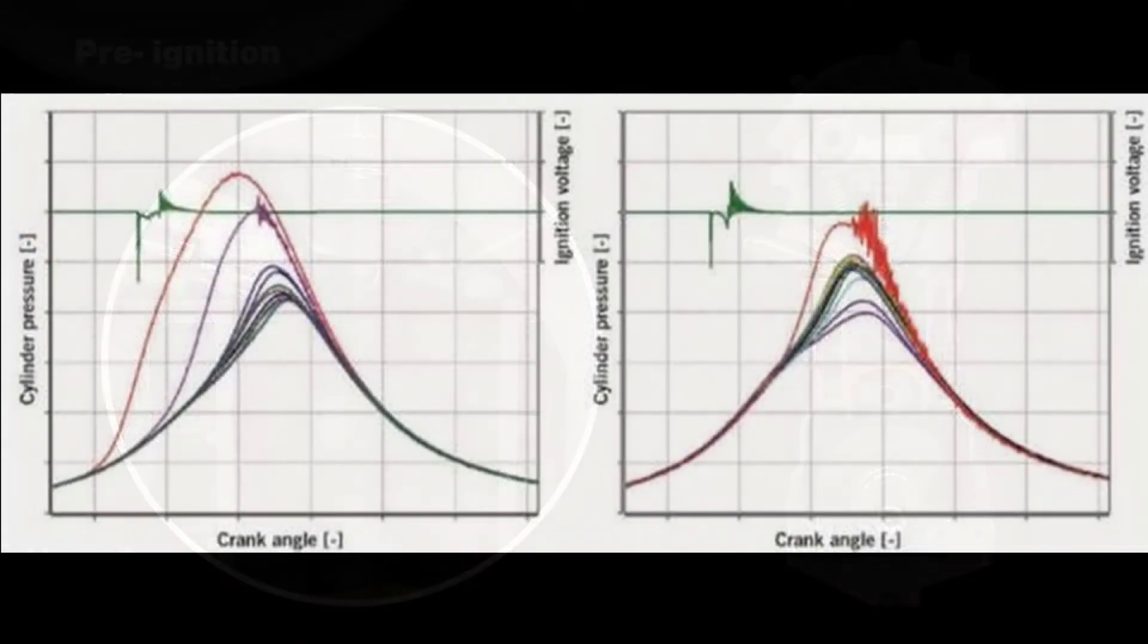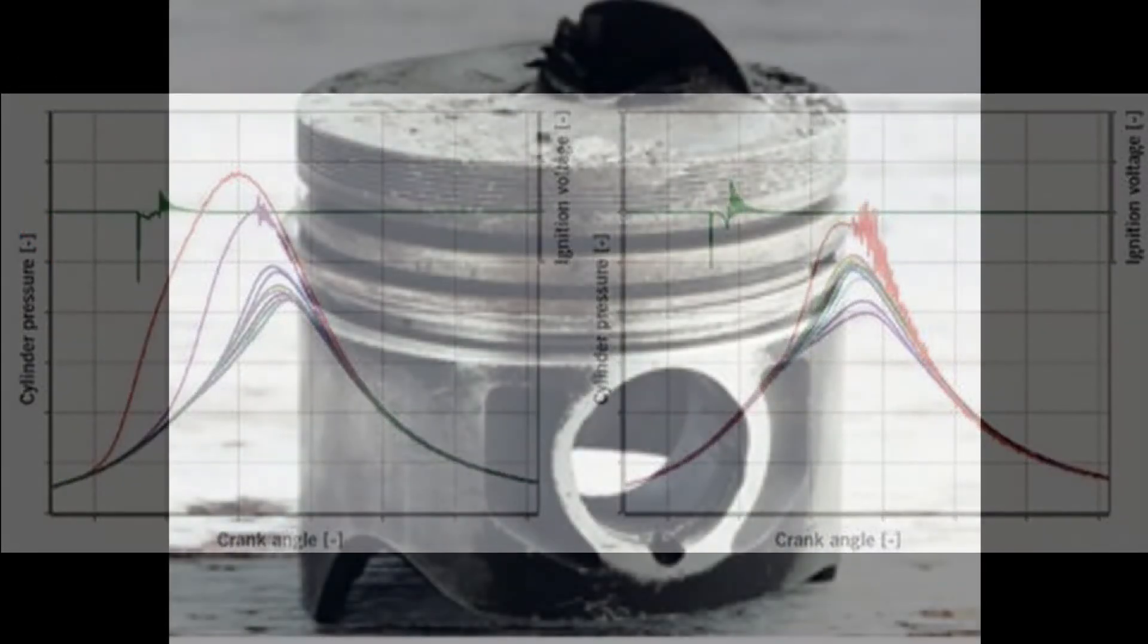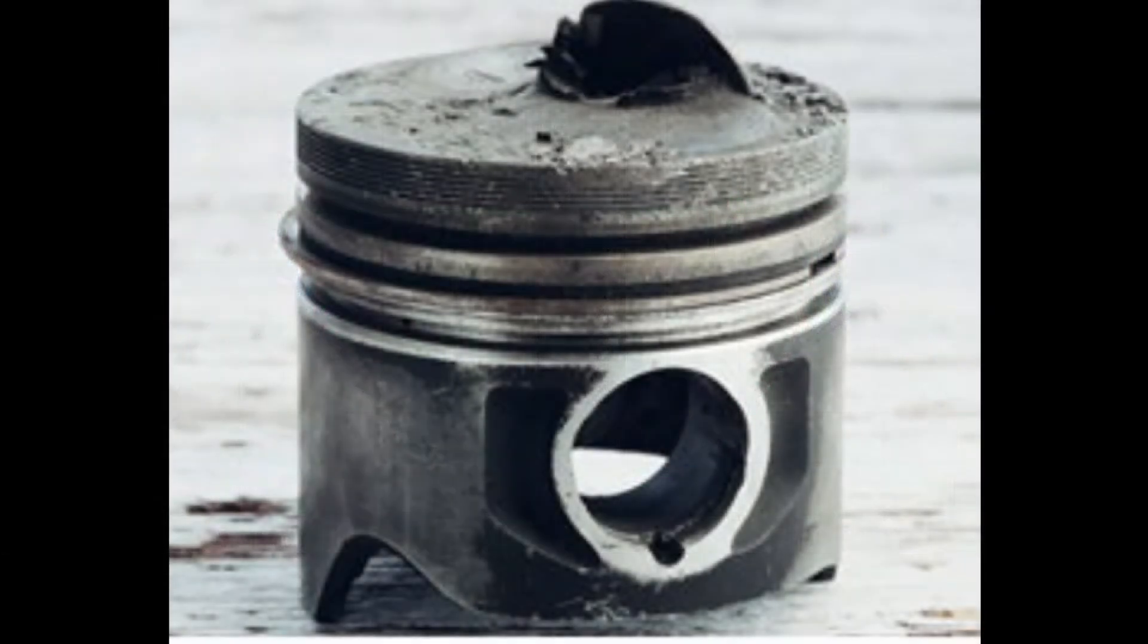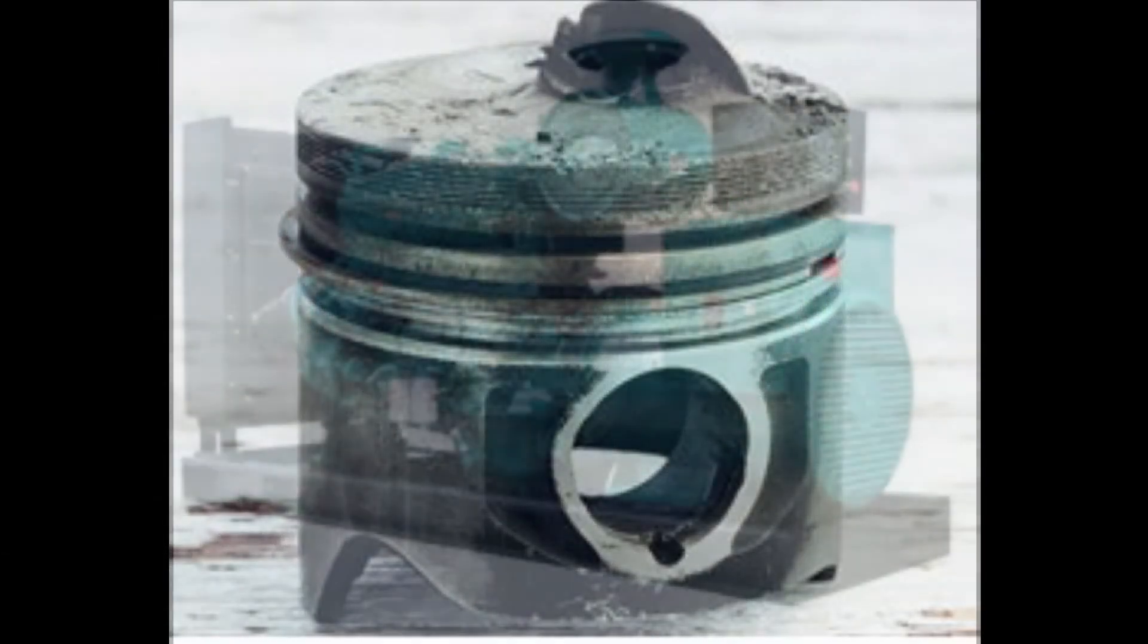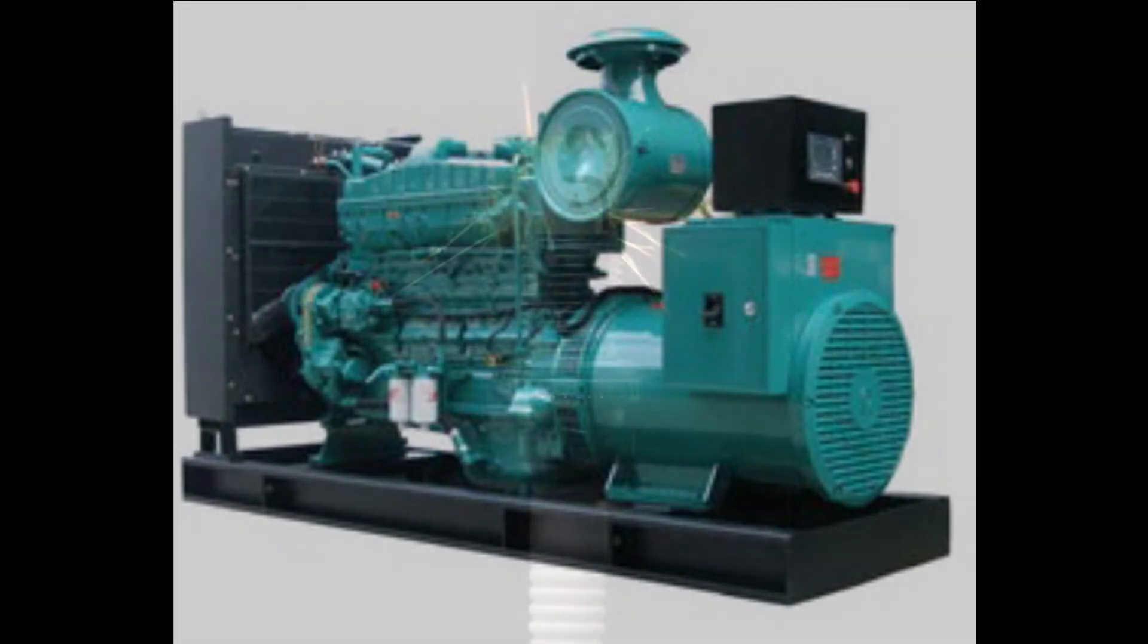These uncontrolled combustions lead to big peak pressures in the combustion chamber, which eventually lead to the destruction of the engine. To further the development of the hydrogen combustion engine, there has to be a method to detect pre-ignition so that the engine can be saved.